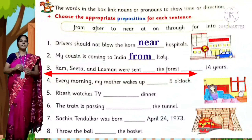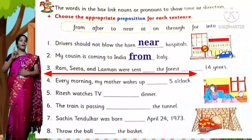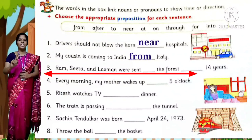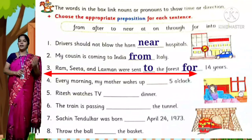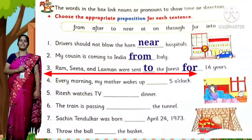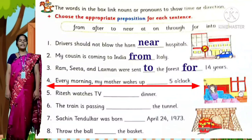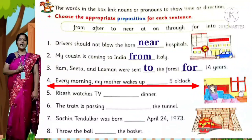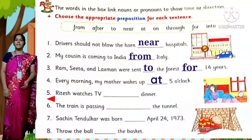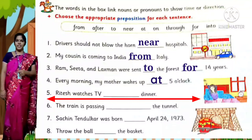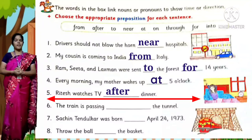Third question: Ram, Sita and Lakshman were sent ___ the forest ___ 14 years. Ram, Sita and Lakshman were sent to the forest for 14 years. Fourth question: Every morning my mother wakes up ___ 5 o'clock — at 5 o'clock. Ritish watches TV ___ dinner — after dinner.